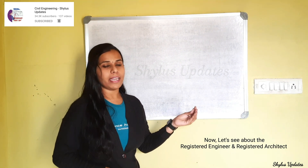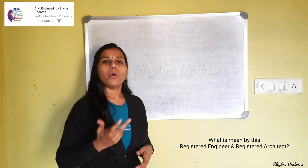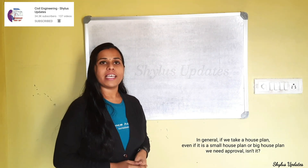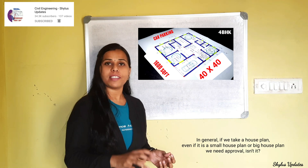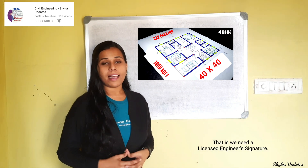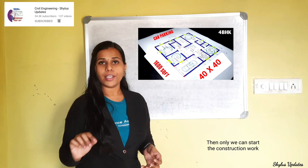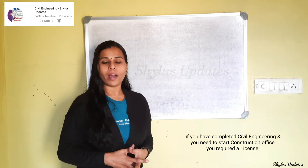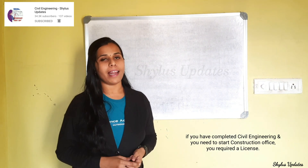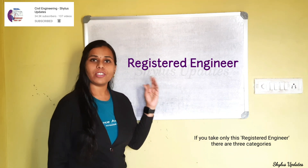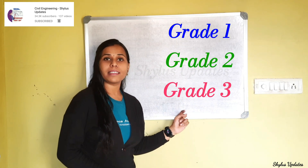Now let's look at the Registered Engineer and Registered Architect categories. In general, even for a small or big house plan, we need approval — we need a licensed engineer's signature before we can start construction work. If you have completed civil engineering and want to start a construction office, you require a license. Under Registered Engineer, there are three categories: Grade 1, Grade 2, and Grade 3. Under Registered Architect, there are two categories: Grade 1 and Grade 2.